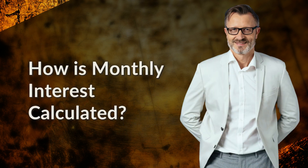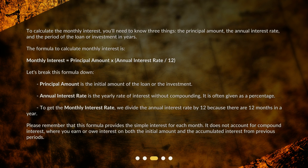How is monthly interest calculated? To calculate the monthly interest, you'll need to know three things: the principal amount, the annual interest rate, and the period of the loan or investment in years. The formula to calculate monthly interest is: Monthly Interest = Principal Amount × (Annual Interest Rate ÷ 12).